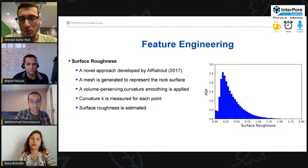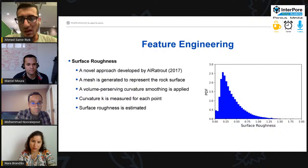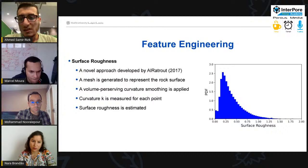We also use a novel technique developed by AlRatrout et al. in 2017 to extract the surface roughness of the image. Where a mesh is generated to represent the rock surface, then a volume-preserving curvature smoothing is applied. The curvature is measured for each point, and from this curvature we use an equation to obtain the surface roughness.